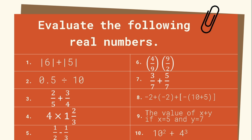Time's up. Let's check your answers. Number 1: the absolute value of 6 plus the absolute value of 5 is equal to 11.